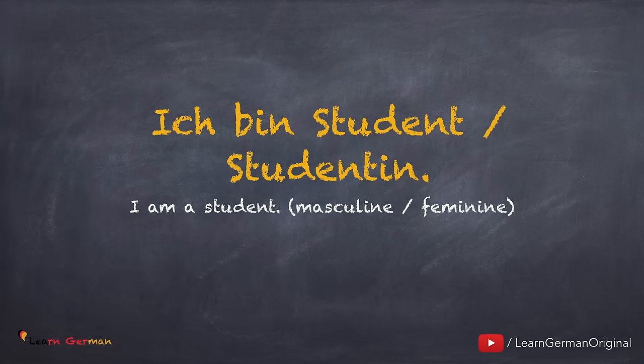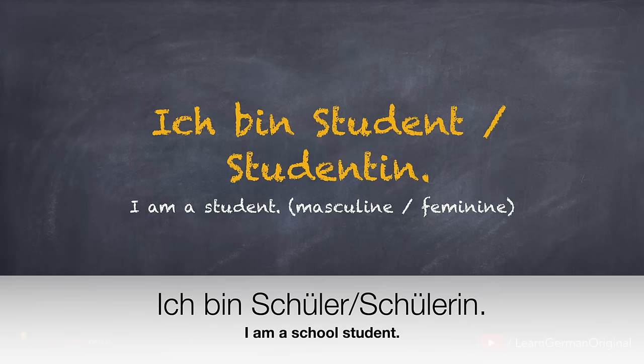Now let's talk about what you do. Ich bin Student. Or if you are a female, you would say Ich bin Studentin. Noch einmal. Ich bin Student. Ich bin Studentin. German has gender-specific nouns like in many other languages. Student is the masculine form and Studentin is the feminine form. If you are a school student, you will say Ich bin Schüler. Ich bin Schülerin. Noch einmal. Ich bin Schüler. Ich bin Schülerin.